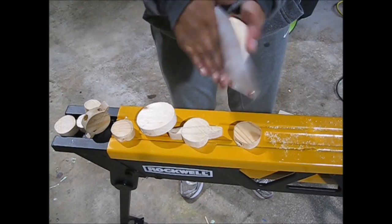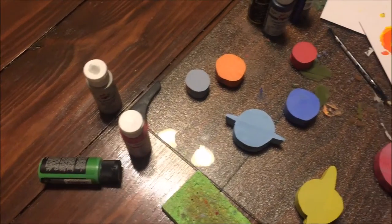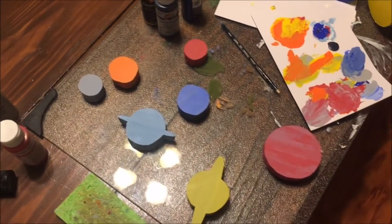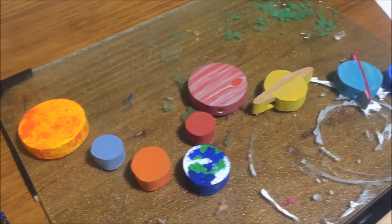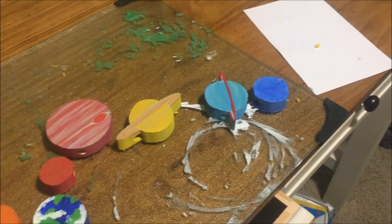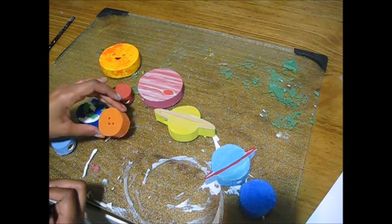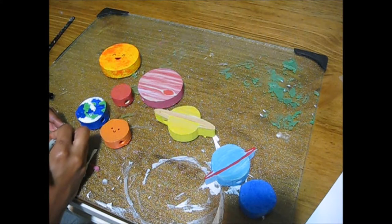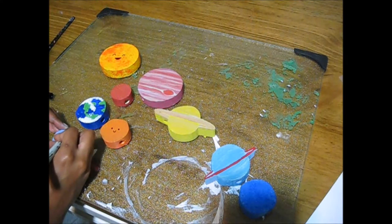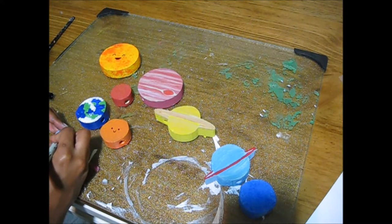Prep the surface for painting and start off with a base coat for each of the planets. Then follow up with more details. I added little happy faces to each of the planets because I wanted to have a cutesy, kid-happy look for my solar system.